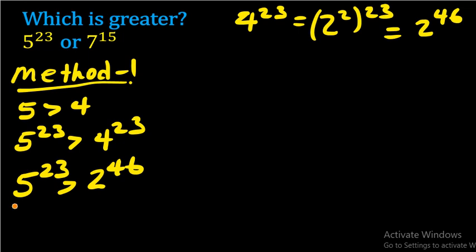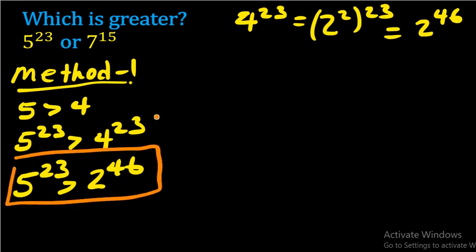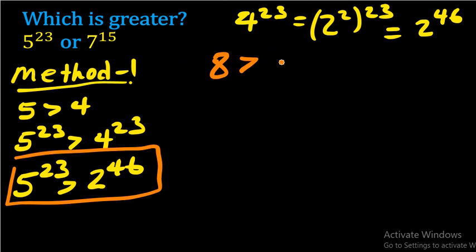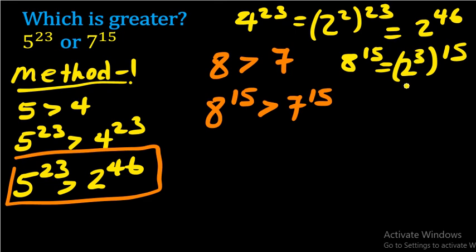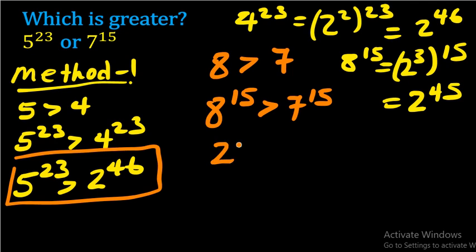Now let us proceed to the other number. The second number is seven to the power of 15. Eight is greater than seven, and we can express eight as an exponent of two. Eight is bigger than seven, so eight to the power of 15 is greater than seven to the power of 15. Eight to the power of 15 can be written as two to the power of three, the whole raised to the power of 15, which means we multiply the exponents to get two to the power of 45.